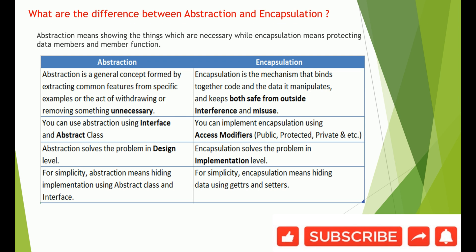For simplicity: abstraction means hiding implementations using abstract classes and interfaces; encapsulation means hiding data using getters and setters. In applications you use properties with getter and setter methods or private methods — that is where encapsulation is achieved. Abstraction and encapsulation both play an important role in achieving object-oriented programming. Thanks for watching.